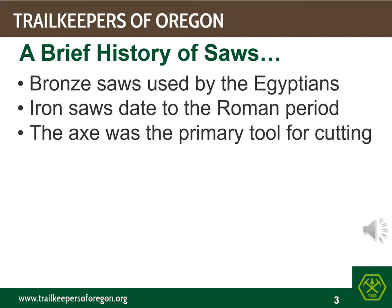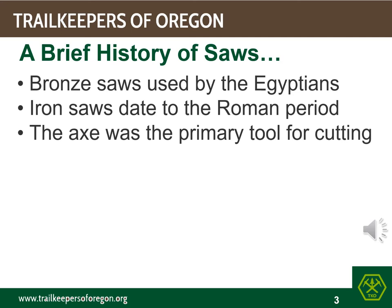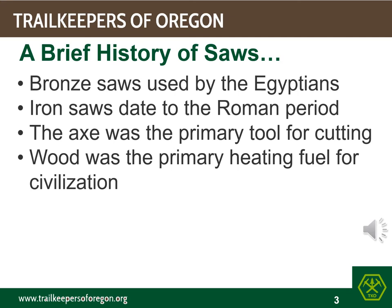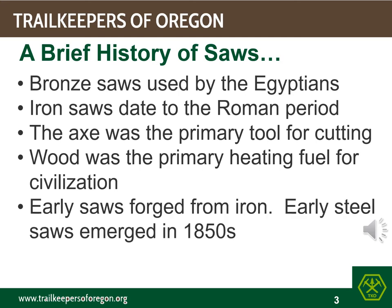During these centuries, however, the axe was still the primary cutting tool for both felling, cutting small logs, and splitting wood. Wood was the primary fuel for heating. In the USA, the crosscut came into wide usage in the mid-1800s for felling trees and bucking logs, mostly because the emerging steel industry allowed for mass production of saws from plate steel.